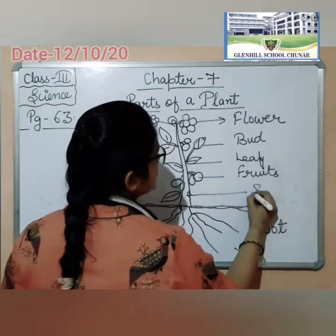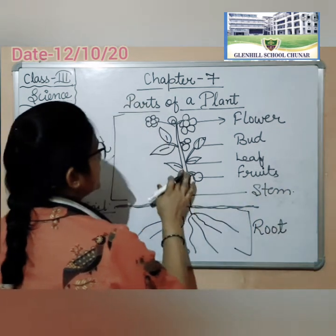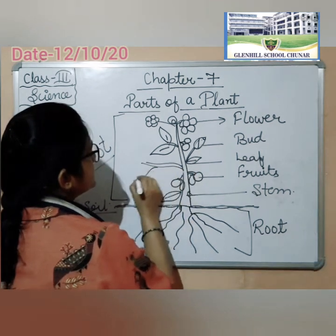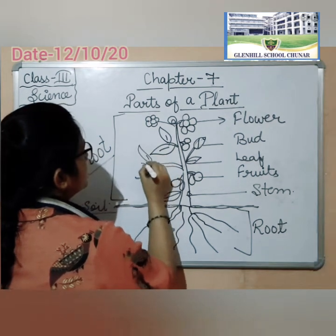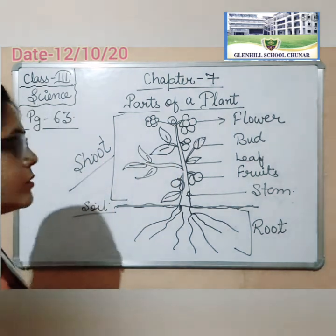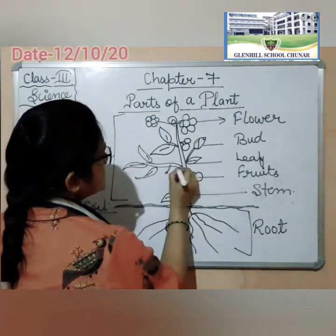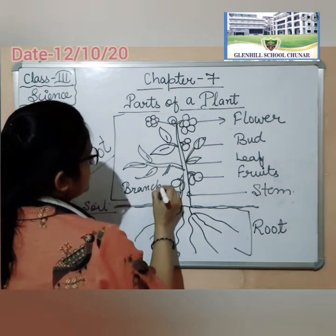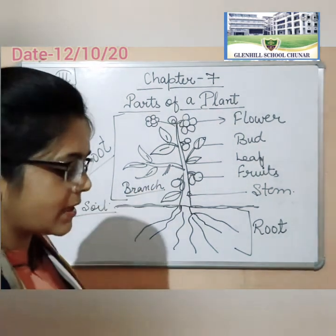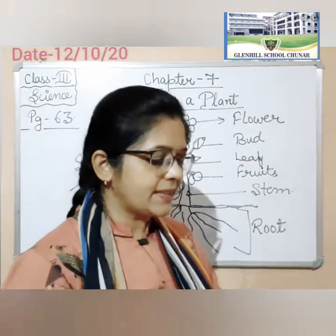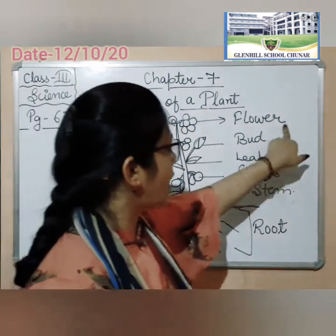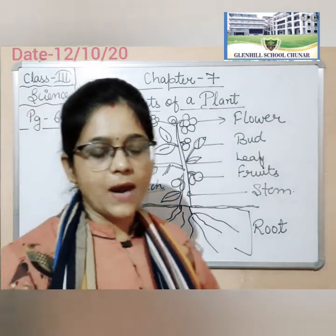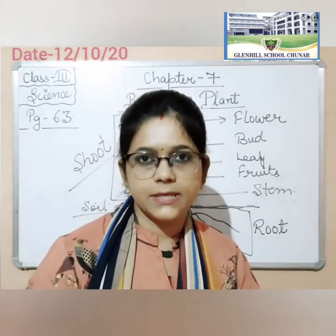This is what? It is stem. Okay students. And also — yeh jo divide hota hai, yeh branch hai. Isse branch bola jata hai, or branches bhi aap bol sakti hain. But the main parts are: flower, bud, leaf, fruit, and stem. Yeh five parts hain jo aapko is chapter mein padhne hain.